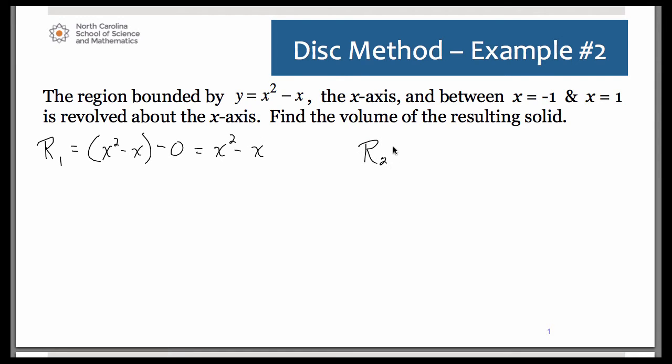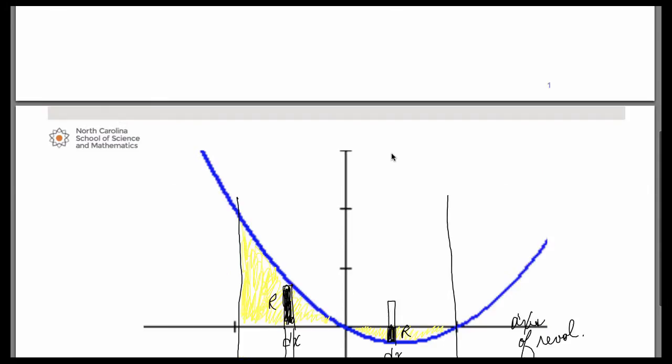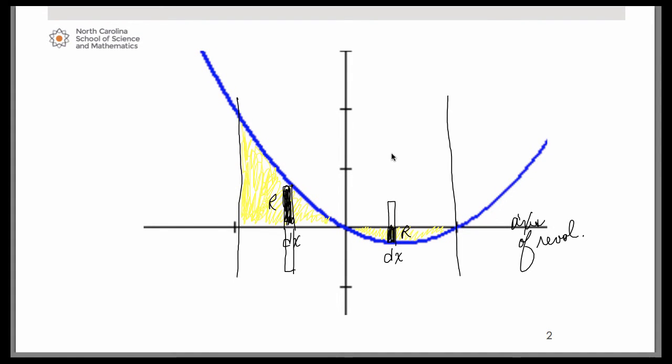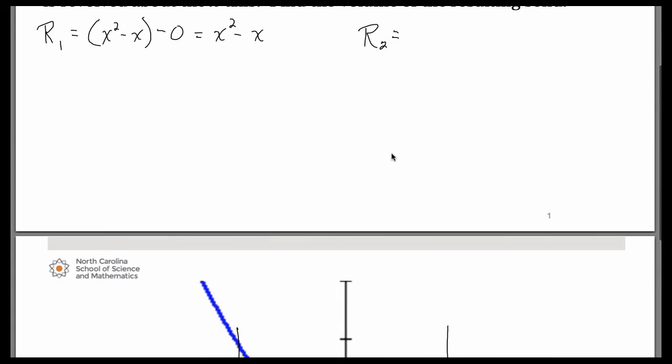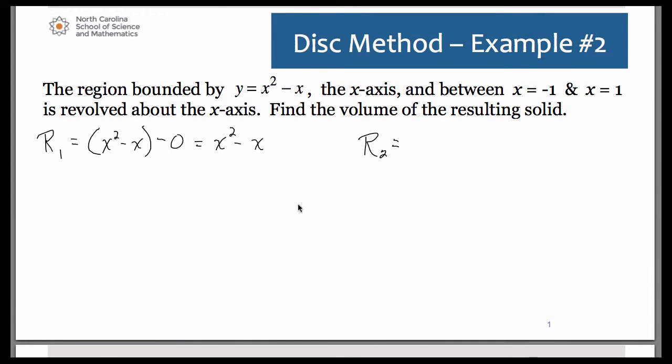The other rectangle, again, we can think of it doing top minus bottom. This time the top is hitting the x-axis, which would be y equals 0, and the bottom is hitting the curve. So what we end up with there is 0 minus the quantity x squared minus x.